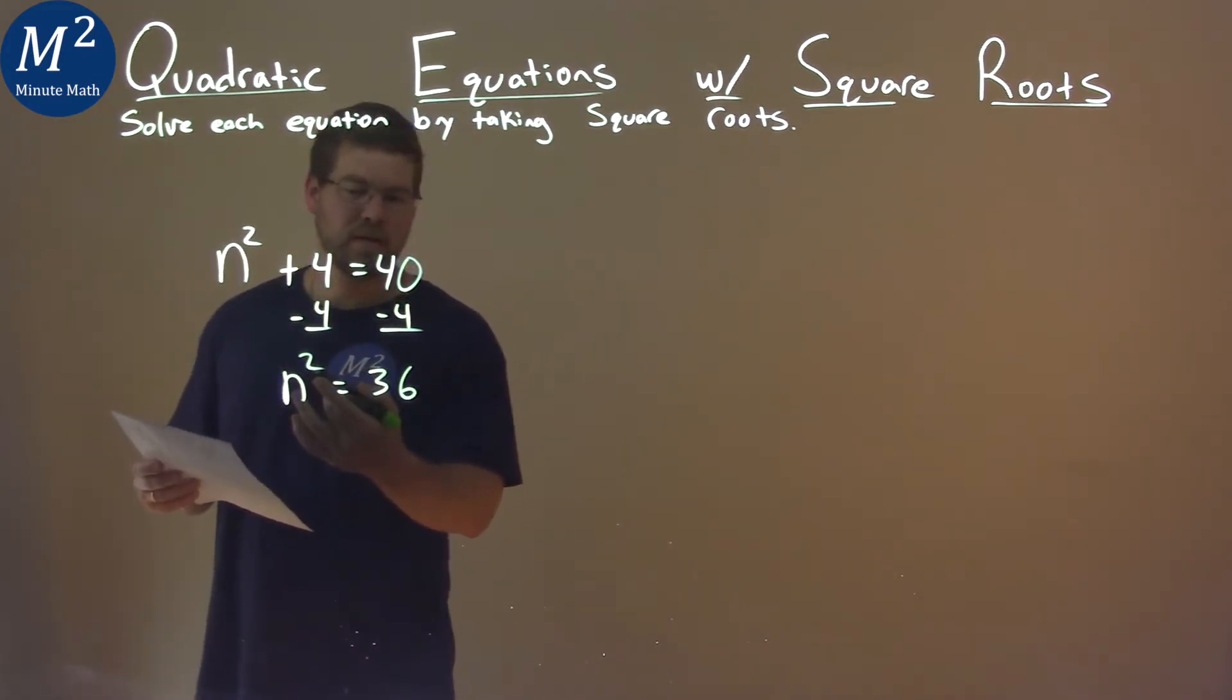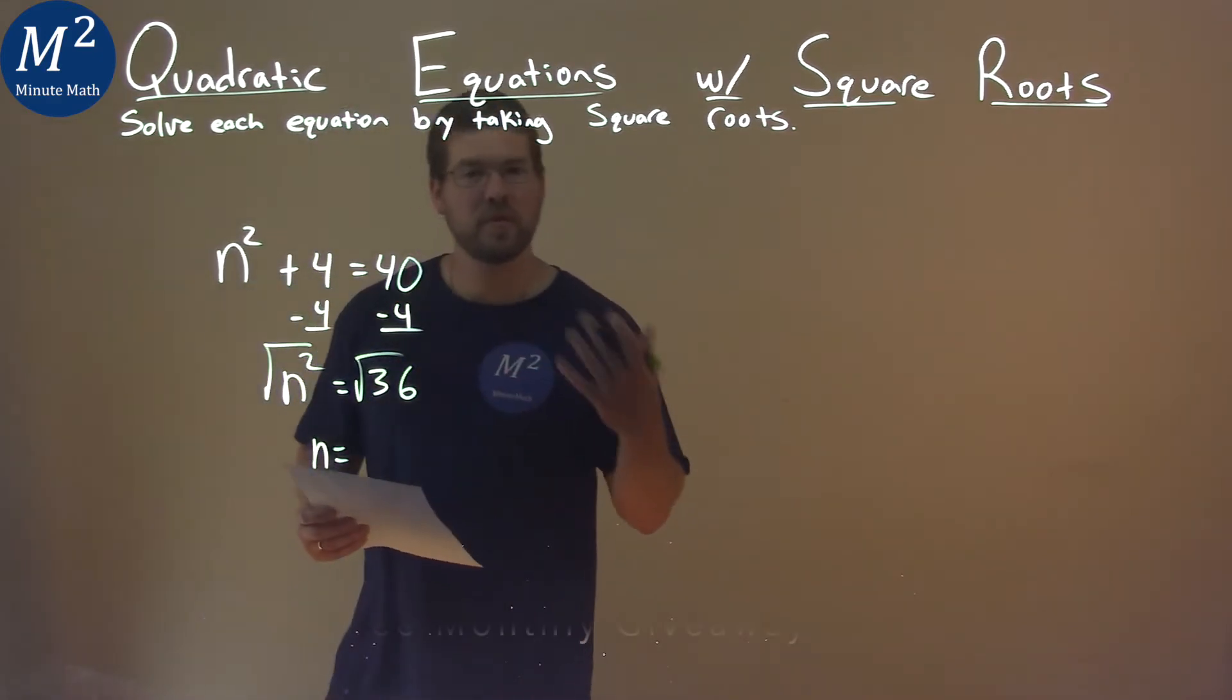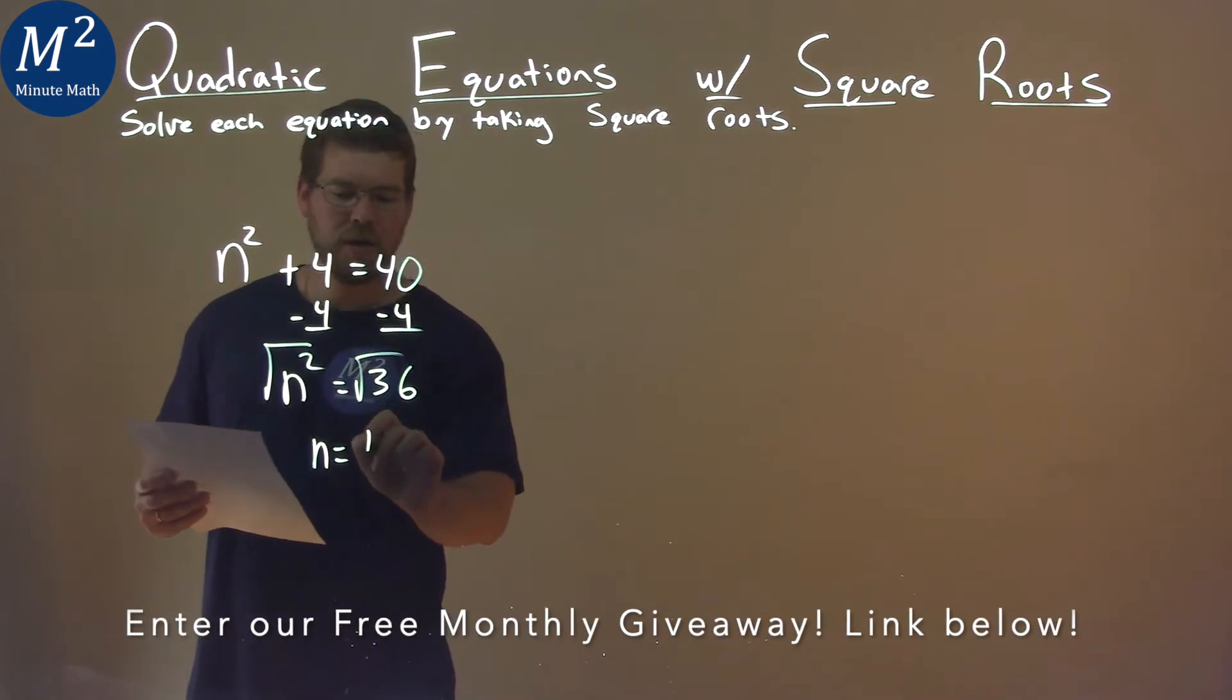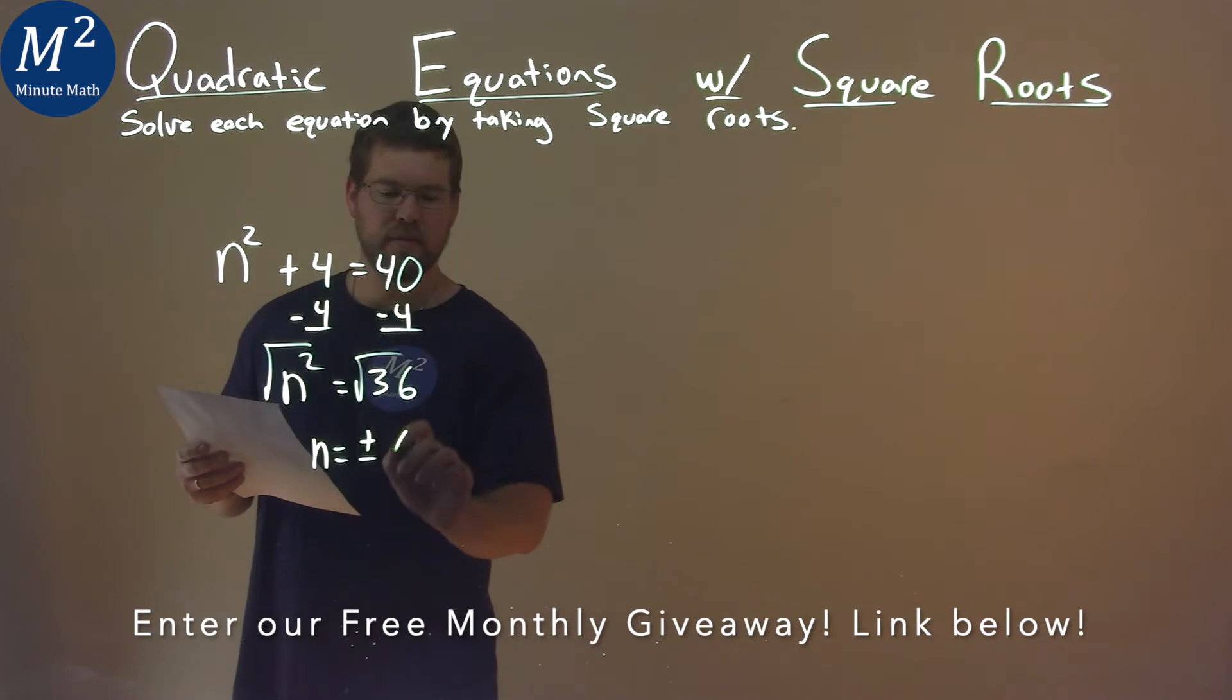Now, to get rid of the square, I have to take the square root of both sides of the equation. n is now by itself, and when we take a square root over an equation, we have to make it plus or minus. Now, the square root of 36 is pretty easy, and that is 6.